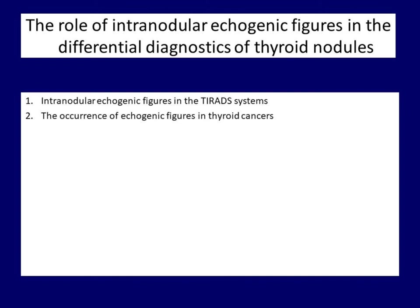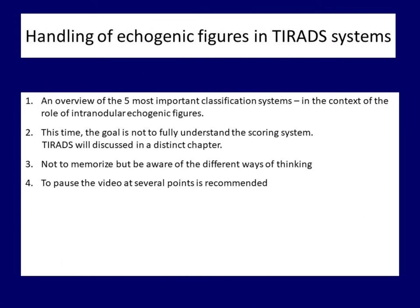The second part of this introductory lecture focuses on the role of echogenic figures in the differential diagnostics of nodular goiter. We focus mainly on the role of echogenic figures in various thyroid systems and on their occurrence in the most frequent subtypes of thyroid cancers. I will give an overview of the five most relevant thyroid systems prepared by professional societies and search for examples when echogenic figures influence the categorization of a nodule. The main tables of the guidance are good summaries, but not enough to fully understand any scoring systems, so I recommend not immersing in the details at this time.